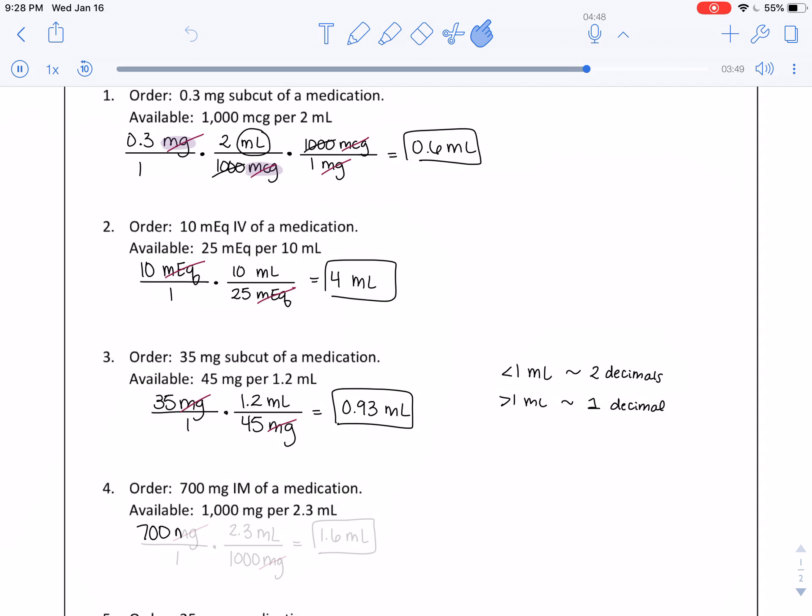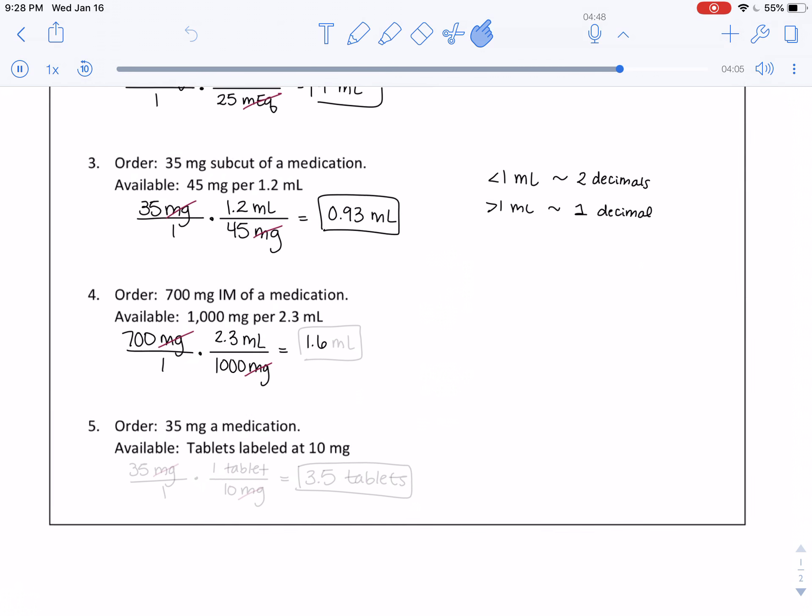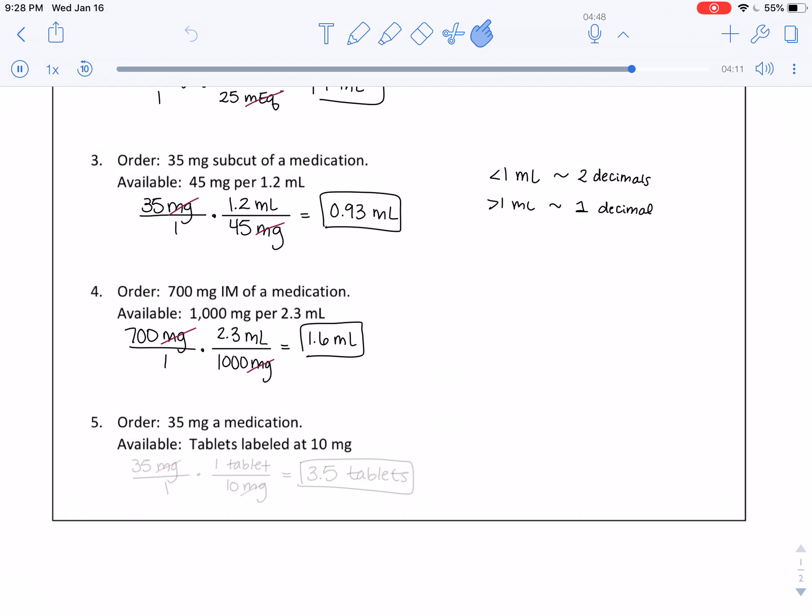Now we have 700 milligrams, and on hand we have 2.3 milliliters per 1,000 milligrams. We can just cancel those, and we get 1.61 milliliters, but because of our rounding rules, we'll keep 1.6. Lastly, 35 milligrams and we have one tablet with 10 milligrams each. We're not answering this one in milliliters, but instead in tablets, because that makes the most sense. That would be 3.5 tablets.